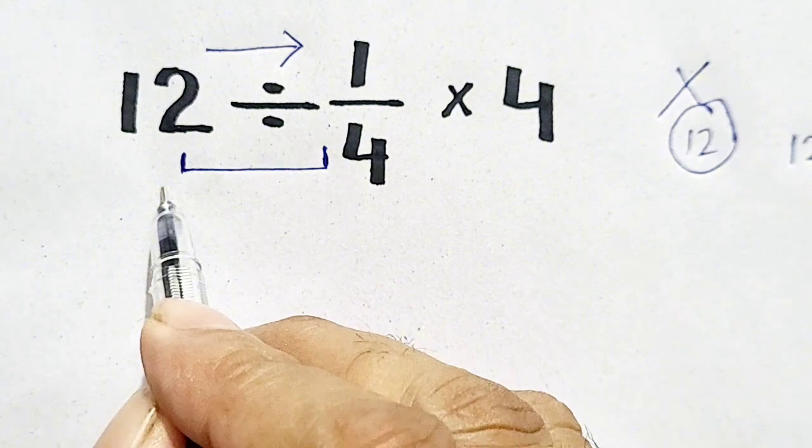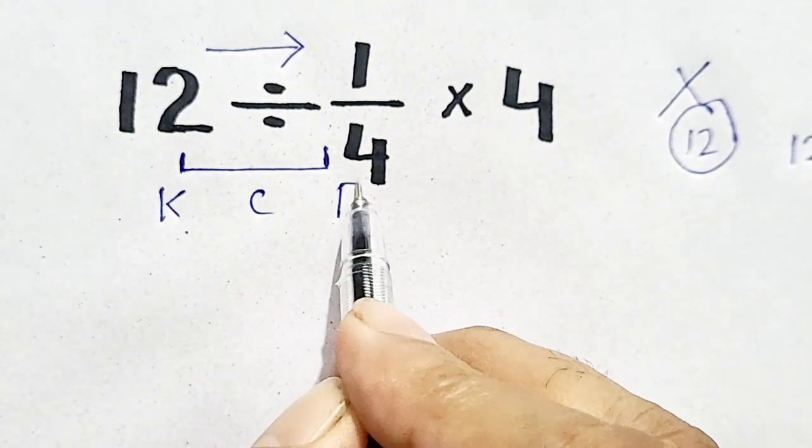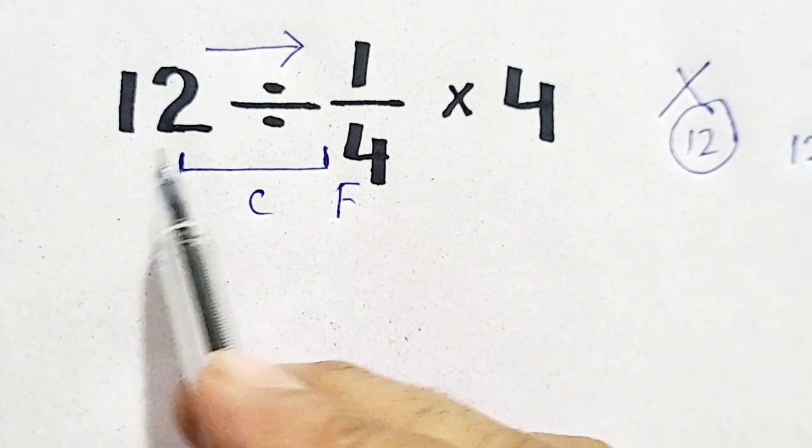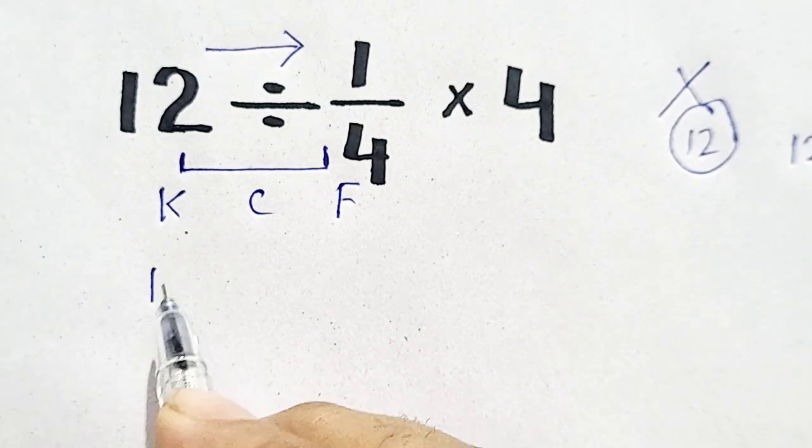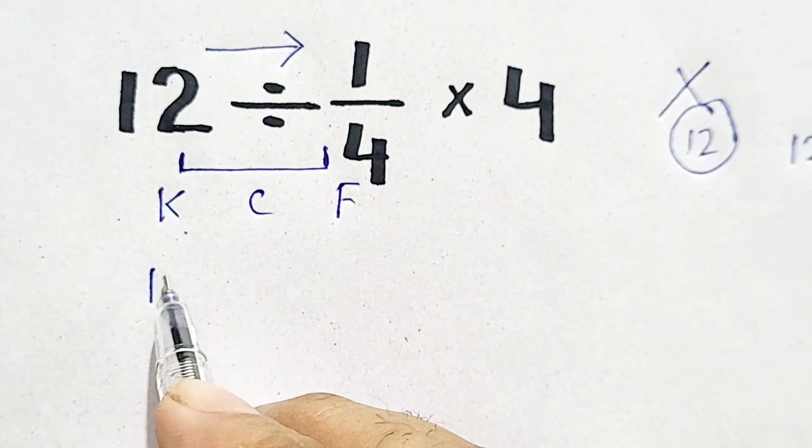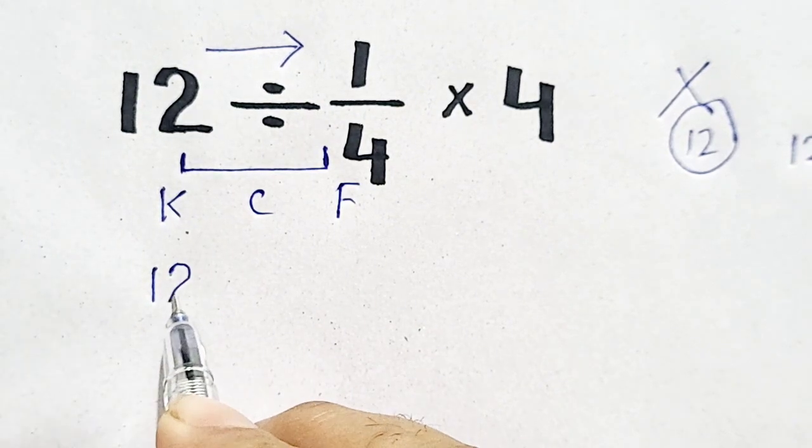Here we apply the KCF rule. What is KCF? 12 is relative to K. K means keep it.